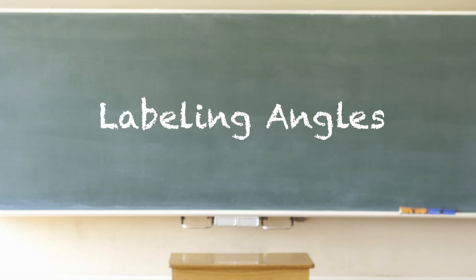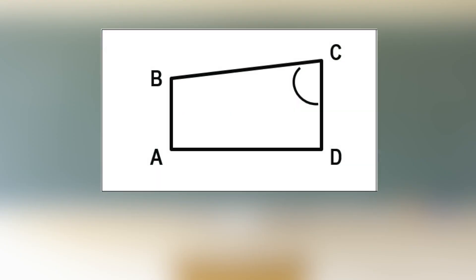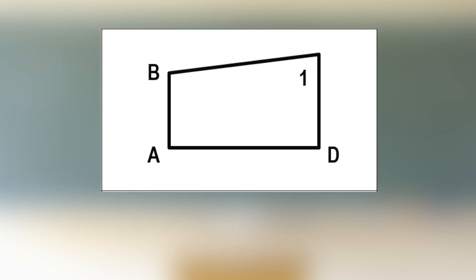Angles need to be labeled like lines or line segments. There are a couple of methods used to measure angles. Here are some examples of angles and how they're labeled. This angle is labeled as angle BCD or angle DCB. Note, the vertex is in the middle. The same angle can also be called angle 1, as shown here. Both labels are correct.